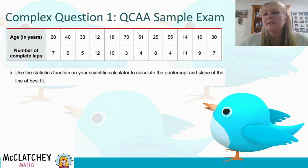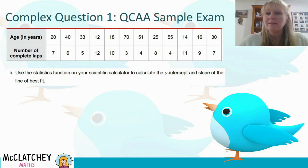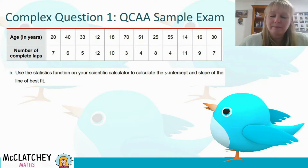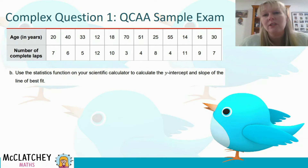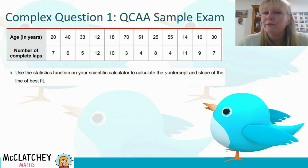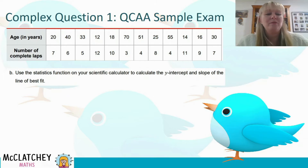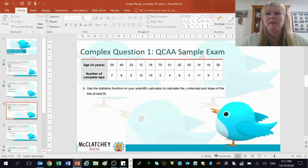Part B: use the statistics functions on a calculator to calculate the y-intercept and the slope. We're asked to find A and B. Now it does say the line of best fit — technically the line of best fit is one that you plot by hand. However, the QCAA has told you here to use the statistics function on your scientific calculator, so I'm guessing they probably mean the line of regression using least squared regression. That's the more appropriate term to use. So let's jump out to our calculator now.